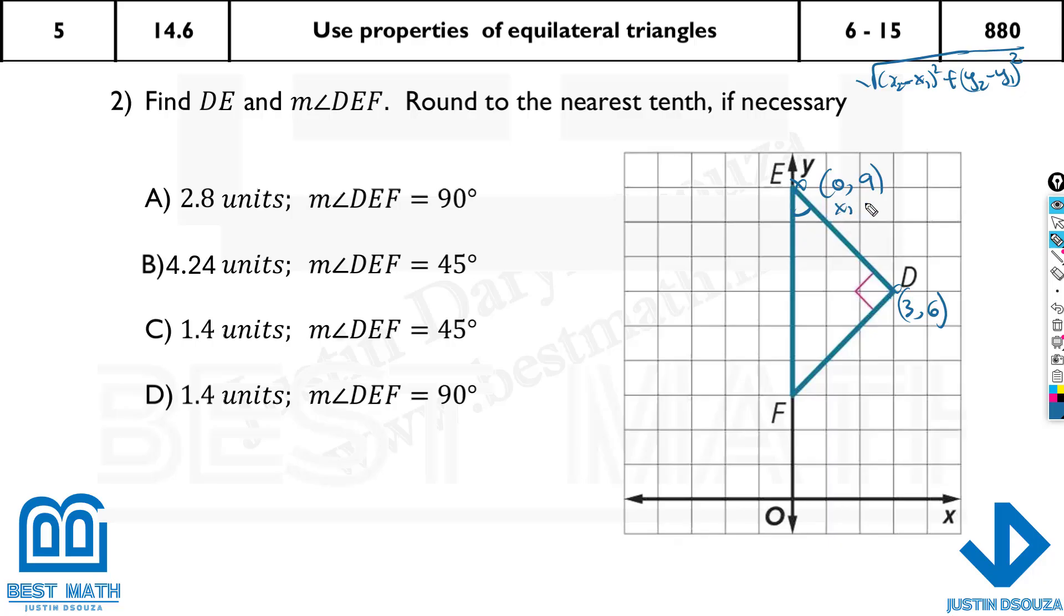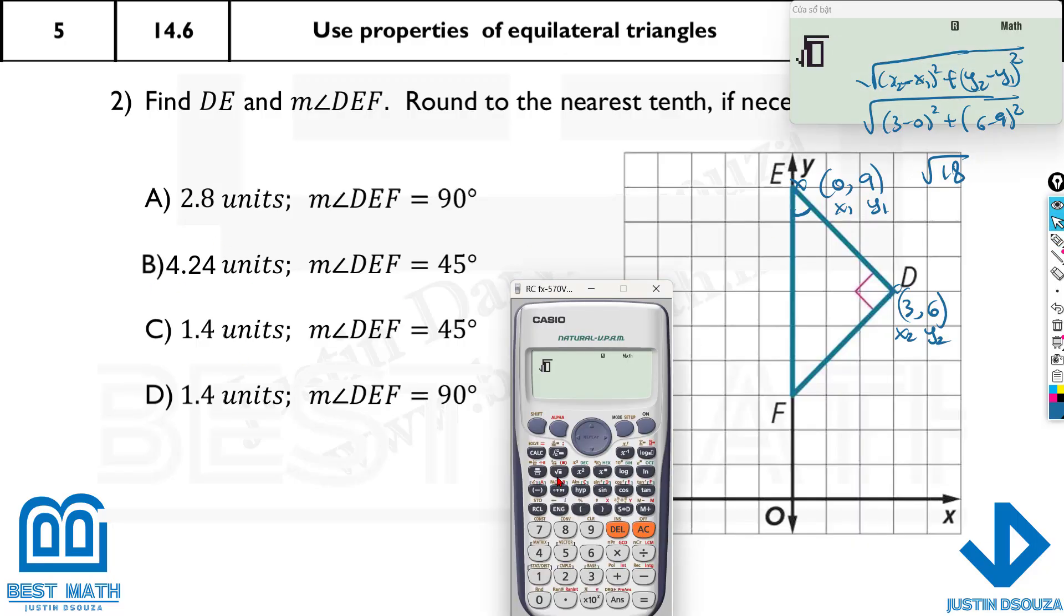Now you can consider this as x1, then this next one will be y1. You can interchange them. So here we just substitute. x2 is 3 minus 0 whole square plus y2 is 6 minus 9 whole square. It will be 3 square, 3 square, that is 9, 18. Square root 18. But you can just use the calculator and we need the decimal point value itself.